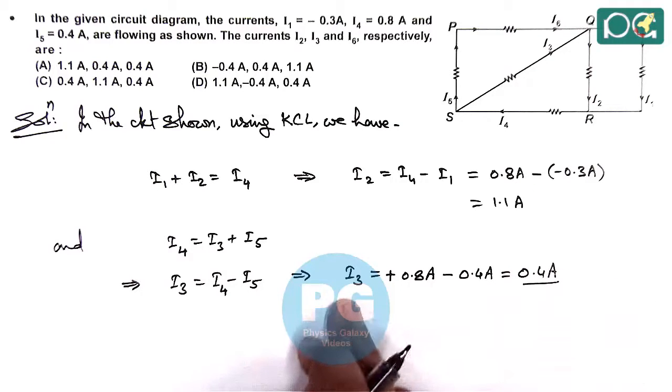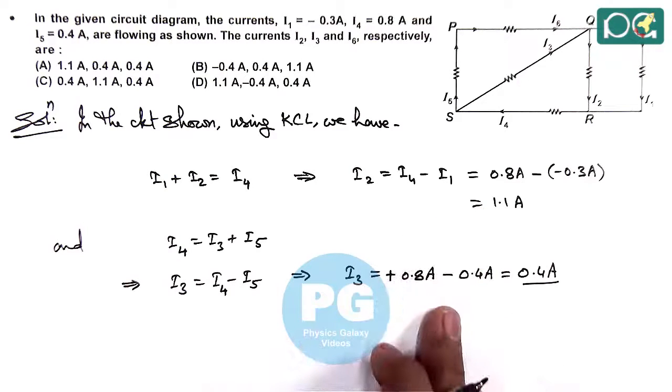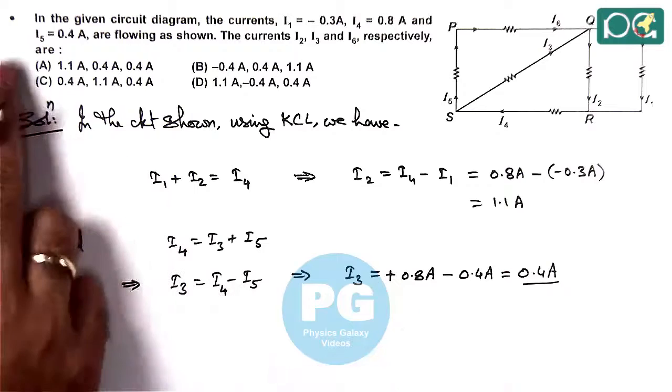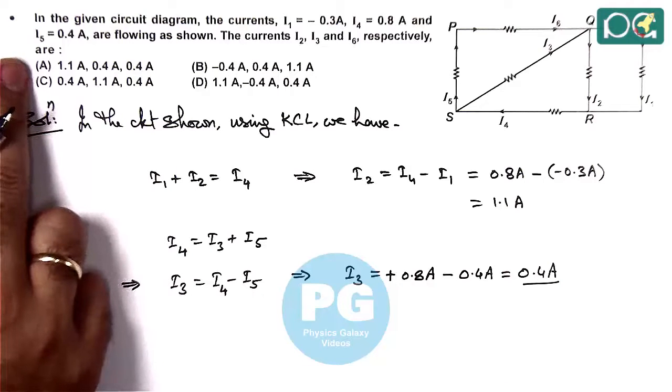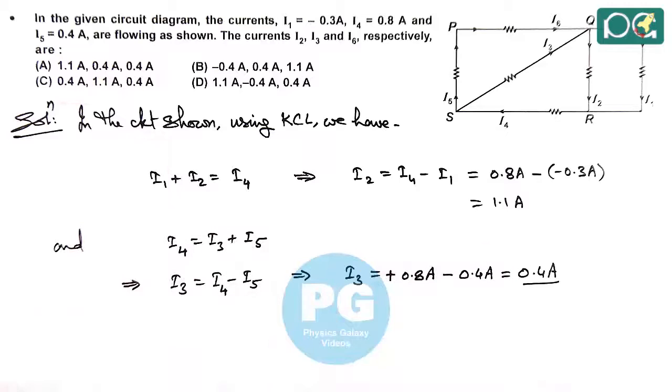This is the value we are getting for i3. So with the values of i2 and i3, here we can see in this question the answer can be chosen as option A, because only in option A i2 and i3 values are appropriately matching.